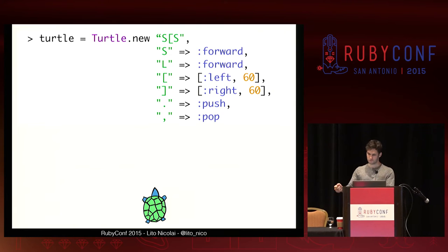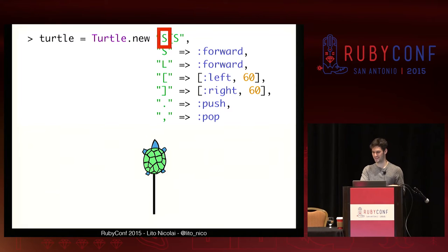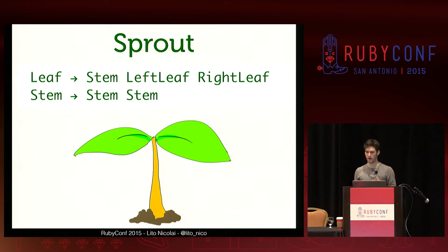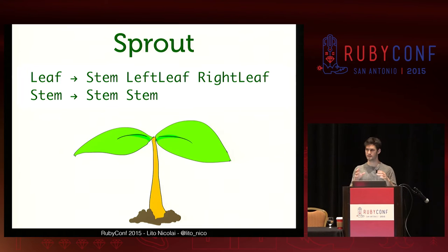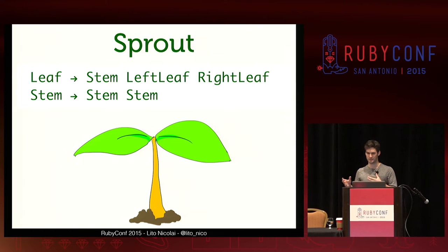How a turtle evaluates a string — I'll give a quick example. You provide the turtle with a string and a set of rules for what the turtle can do. In my Ruby implementation, these are all symbols, or a list with the turn and the number of degrees. When you see a stem, move forward. When you see an L, move forward. If you see a left bracket, turn left. So as the turtle evaluates, it'll go: I see an S, I will move forward. See a left bracket, I will turn left 60 degrees. I see another S, I'll move forward.